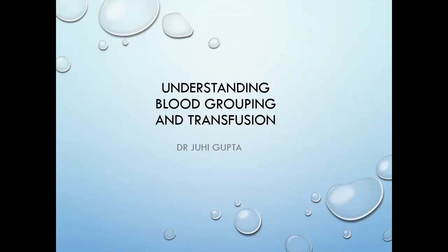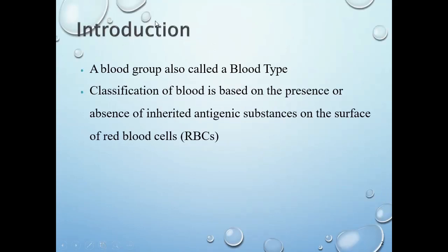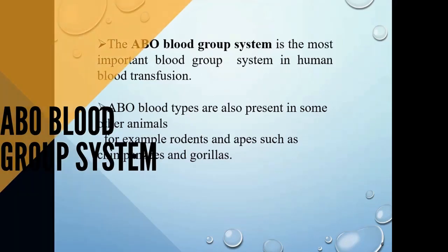Welcome to this talk on understanding blood grouping and transfusion, a very essential part of hematology practical as well as theory. Blood is a liquid connective tissue responsible for transportation of almost everything across the body. Blood grouping or blood typing is based on the presence or absence of inherited antigenic substances on the surface of red blood cells — the structural presence of substances on the RBCs decides the blood group.